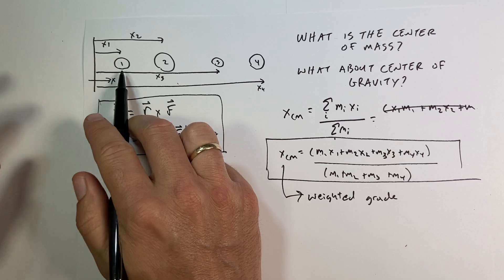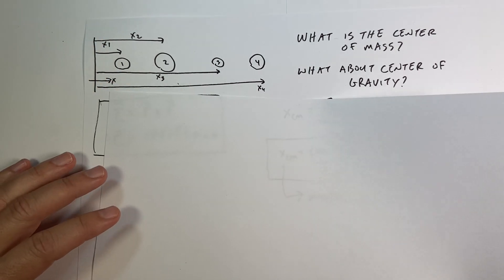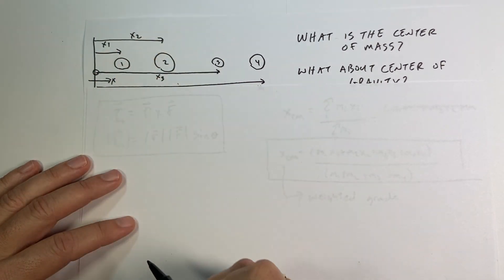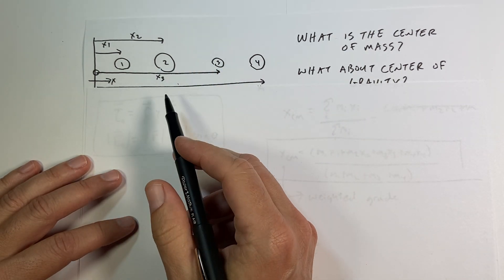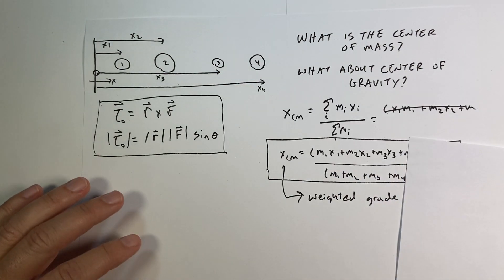Now let's do another problem with these same masses. So what I want to do is to calculate the torque about this point, that's my origin, due to these four masses, and they all have a gravitational force acting on them.